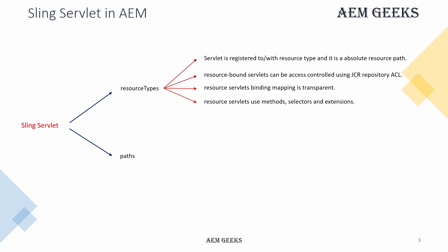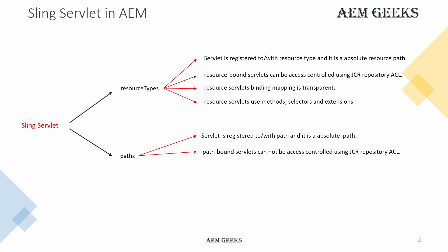There is a simple, transparent mapping. You can define methods, selectors, and extension — what methods the servlet will support. The other way is binding your servlet with a path. It's an absolute path and access control or permissions are not applied because it's a path-bounded servlet. The preferred way is resource type. You should only use path type if there is a requirement you cannot achieve using resource type.